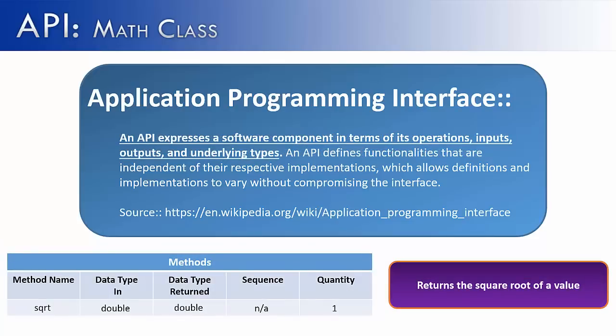So what does this mean? Well, as I stated earlier, what do you need to know about a method in order for it to run correctly? You have to know its name, data type in, what it returns, does it have a sequence, how many values you put into it, and you also have to know its function or purpose. So that's the first part and purpose of an API.